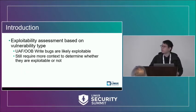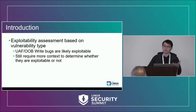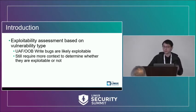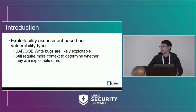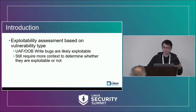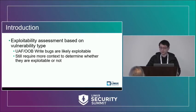To that end, one promising direction is to automate the process of vulnerability assessment, and one plausible and trivial solution is to look at the crash type. For example, use-after-free and out-of-bound write are considered the most severe bugs because they are more likely to be exploited. That being said, it still relies on some more context to determine whether any particular vulnerability can be truly exploited or not, as I will explain in the following slides.